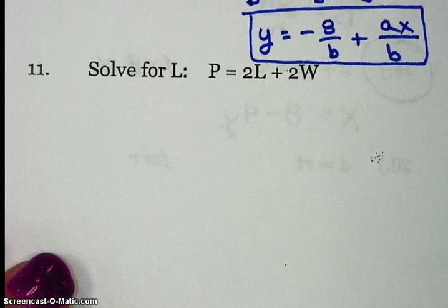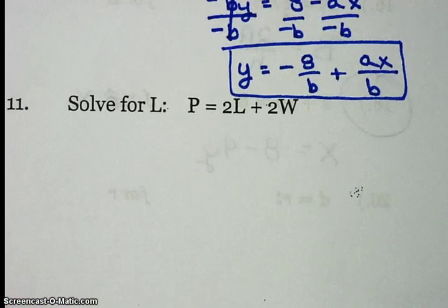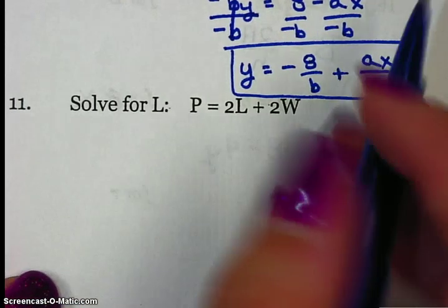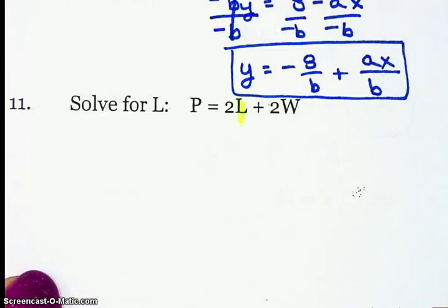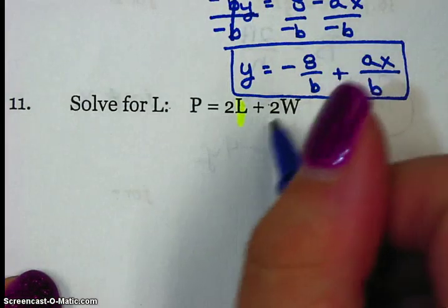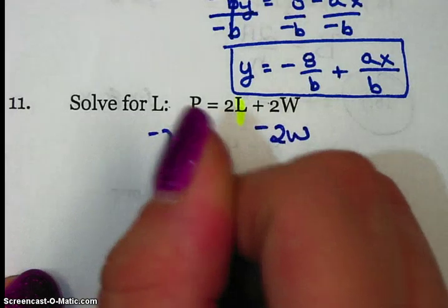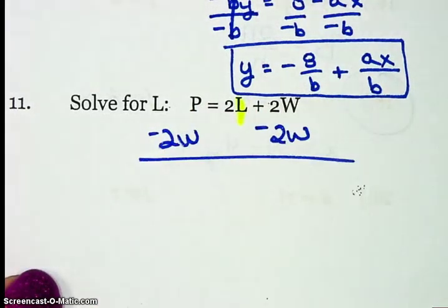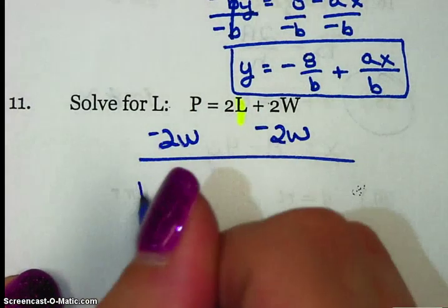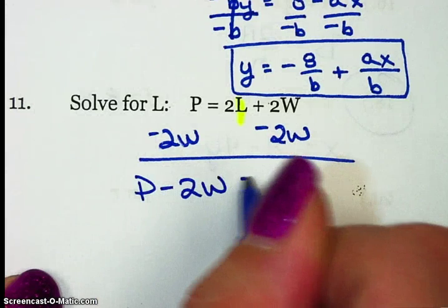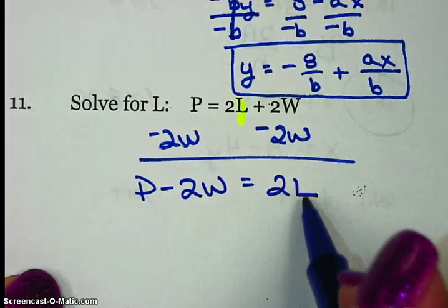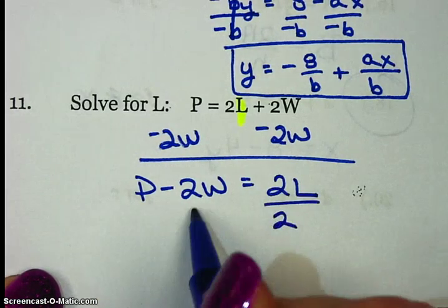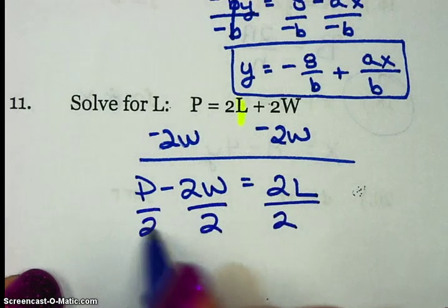Alright, last one, number 11. P equals 2L plus 2W. It's our perimeter formula. We are solving for the L. Okay, be careful. It's not a 21, it's an L. So I'm going to start by subtracting 2W. There's two terms. You have to add or subtract one of them. P minus 2W equals 2L. I'm solving for W, so I have to divide every single term by 2.